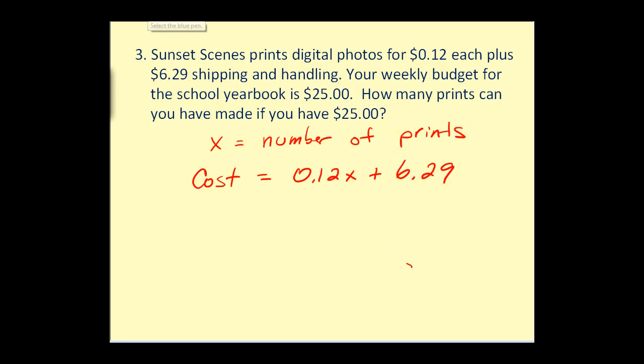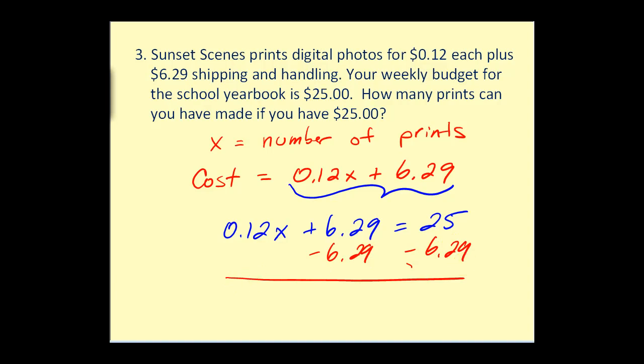So the equation that we want to solve, since we have $25 to spend, we want to set this expression for cost equal to 25. Now we could multiply it by 100 to clear the decimals. But since we're going to use the graphing calculator, let's go ahead and just do this in its current form. This would give us 0.12x is equal to 18.71. Again, you can check this on the graphing calculator if you wish. Let's take this over to the next screen.